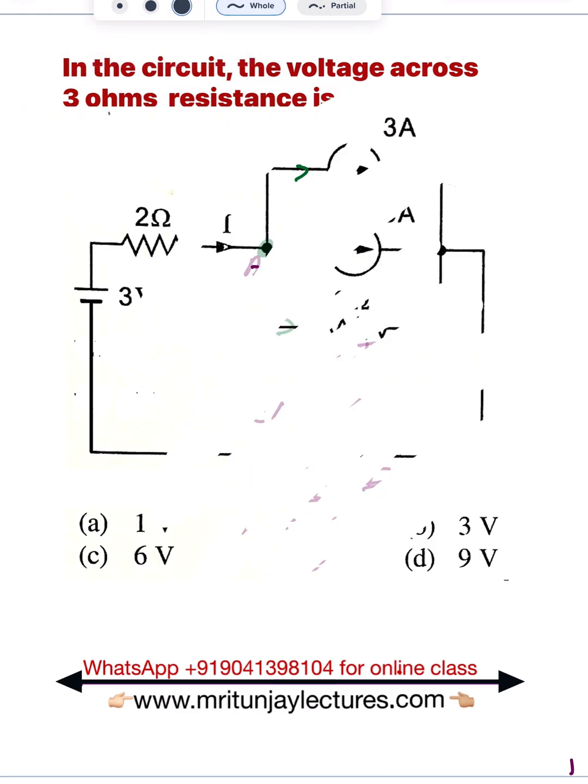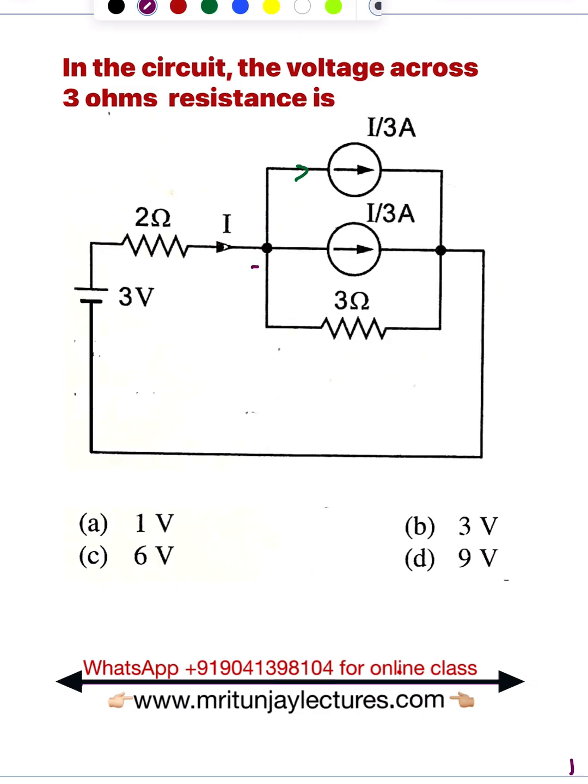Now, if it is clear what the current in this 3-ohm resistance is—how much? I/3, clear. Now, how can we determine I?